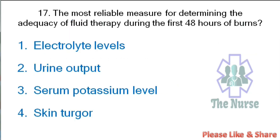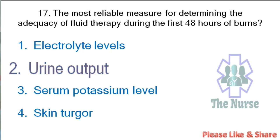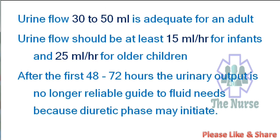Next question: The most reliable measure for determining the adequacy of fluid therapy during the first 48 hours of the burn — electrolyte level; urine output; serum potassium level; skin turgor. Correct answer: urine output. Urine flow of 30–50 ml per hour is adequate for an adult; at least 15 ml per hour for infants and 25 ml per hour for older children. After the first 48–72 hours, urinary output is no longer a reliable guide to fluid needs because the diuretic phase may initiate.